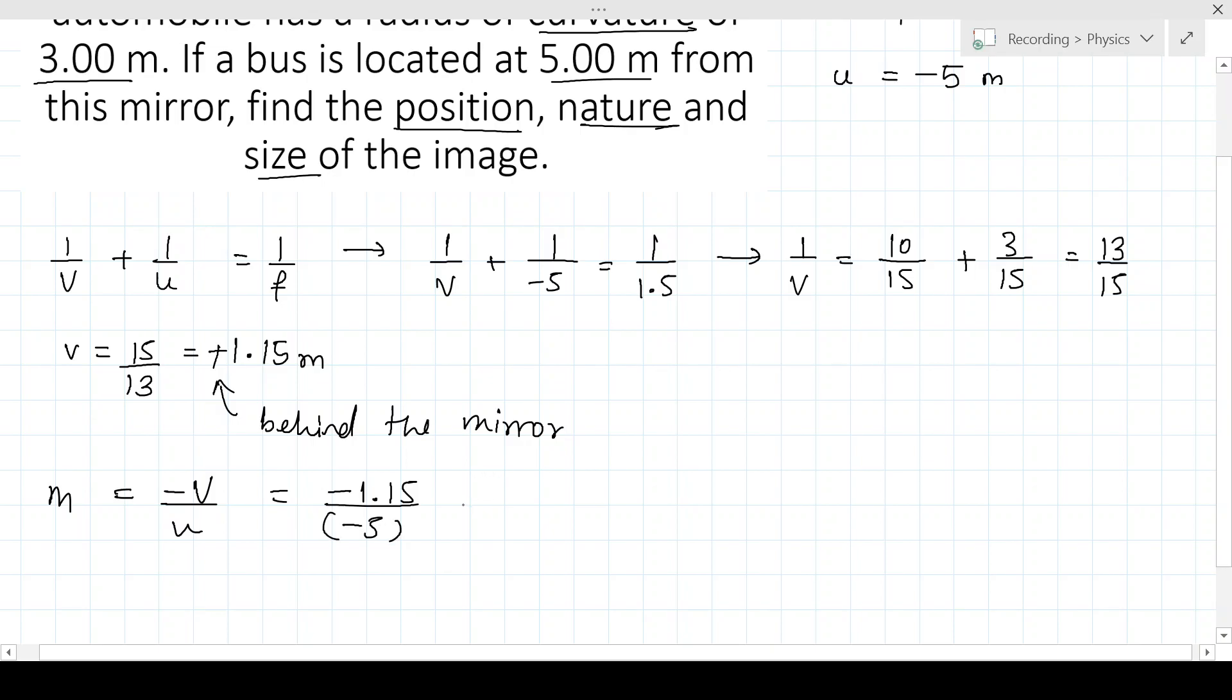We can write this as 15 by 13, minus 15 by 13 by minus 5, that gives us 15 by 13 multiplied by 1 by 5, that gives us 3 by 13, and 3 by 13 equals 0.23.